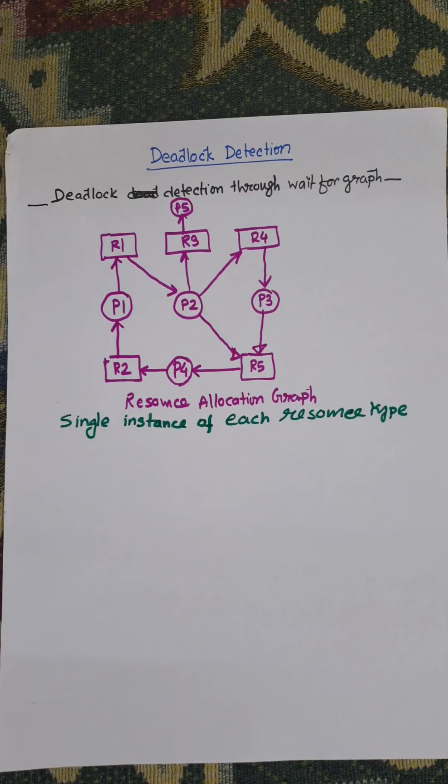In this video I am going to check deadlock detection mechanism for single instance of each resource type. This is a resource allocation graph. From the graph we need to find out whether there is any deadlock present or not.